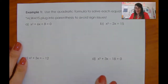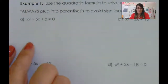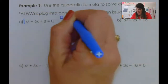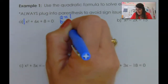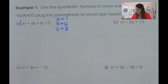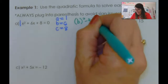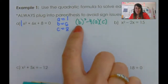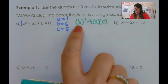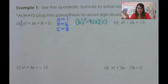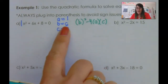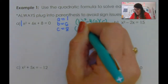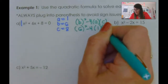Here's our first problem. It already equals zero, so good. A is 1, b is 6, and c is 8. The first thing I'm going to do is figure out b squared minus 4 times a times c. I write b in parentheses because if b is ever negative, it's super important — when you square it, it'll become positive, and if you're not thinking about it, you might get a negative number in your calculator.